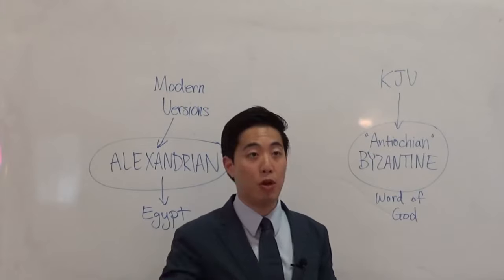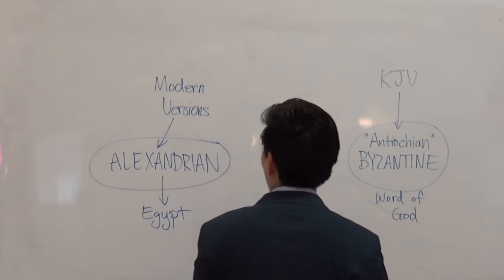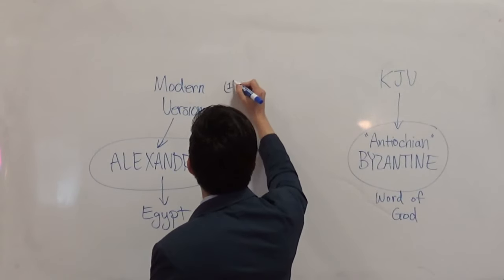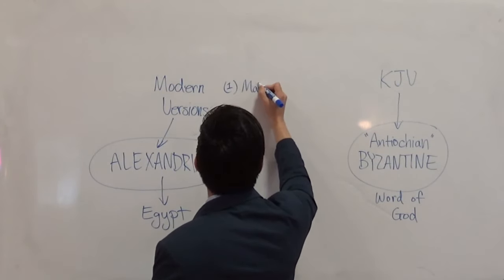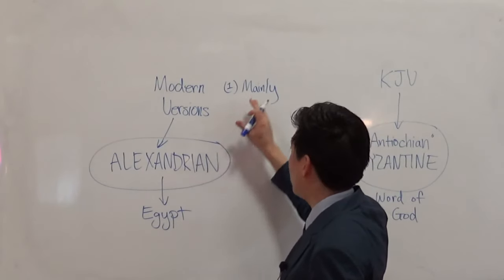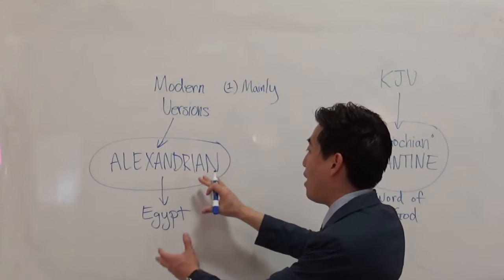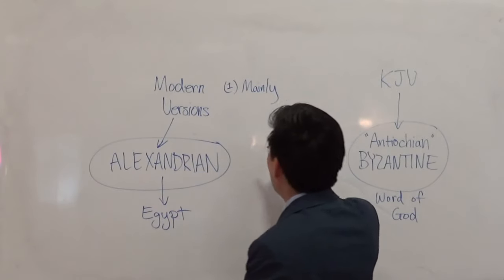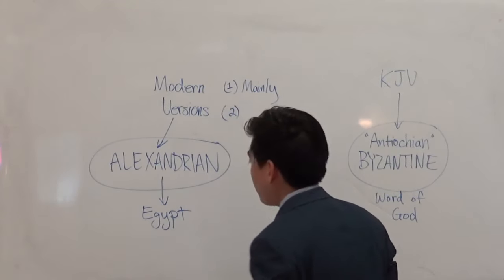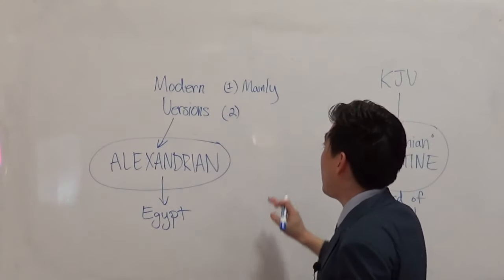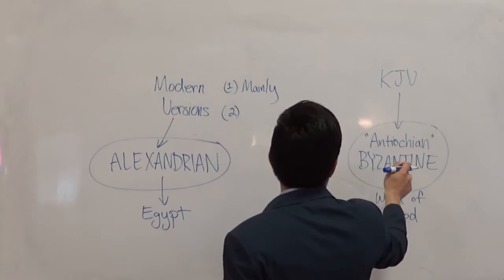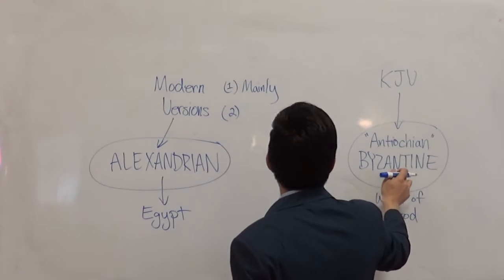Here's an important disclaimer. The first disclaimer is that modern versions mainly — not every verse — came from Alexandrian manuscripts. The second disclaimer is that there are modern versions that claim to come from the Antioch and Byzantine family.